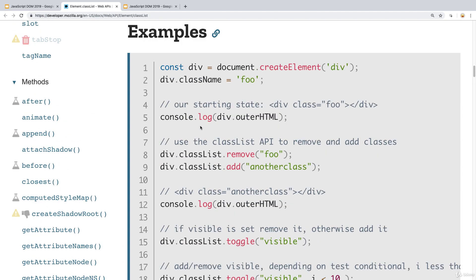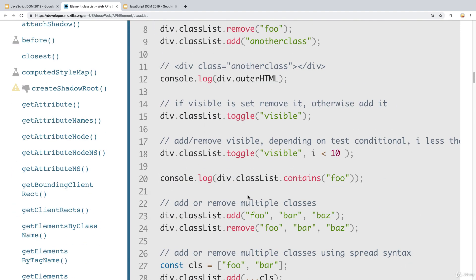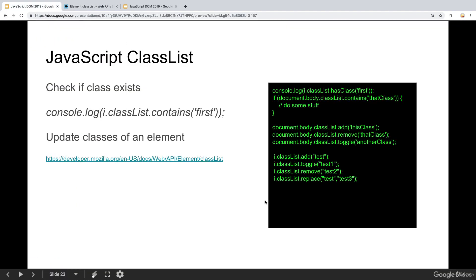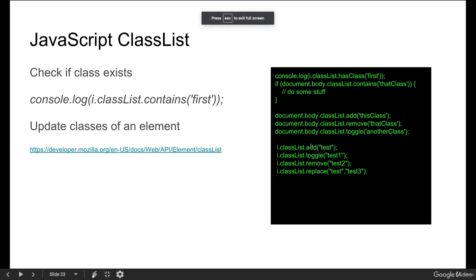There are also great examples at the Mozilla Developer Network. You can remove, add, toggle, and also use contains. We've got quite a few samples where we're selecting elements from the body and checking to see if it has a class of 'first'. This returns a Boolean value, and we can use that in a condition — if it's true, we can execute a block of code.